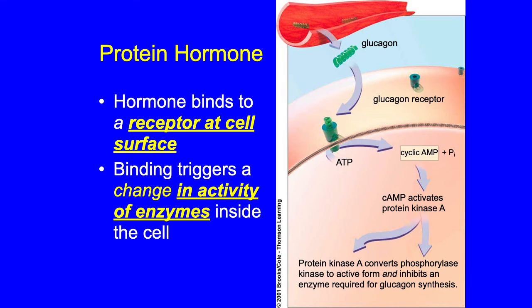Protein hormones bind to a receptor at the cell's surface because, as we know from cells, the Golgi packages proteins to be shipped out of the cell — so protein hormones wouldn't be able to enter as easily. What ends up happening is they bind to a receptor outside the cell and trigger a change in the activity of enzymes inside the cell, causing a cascade of activity.